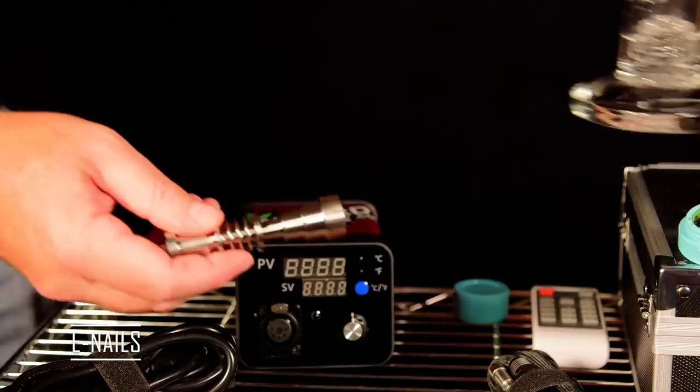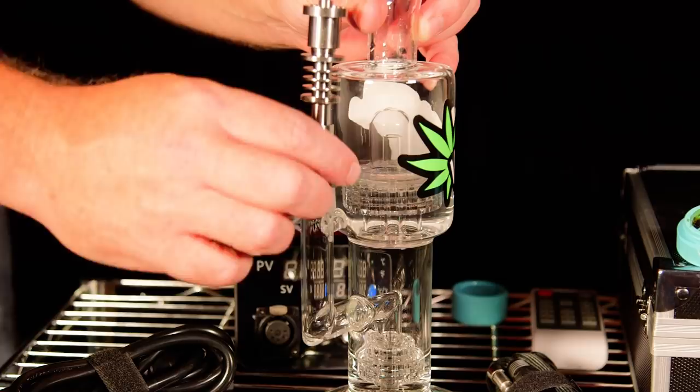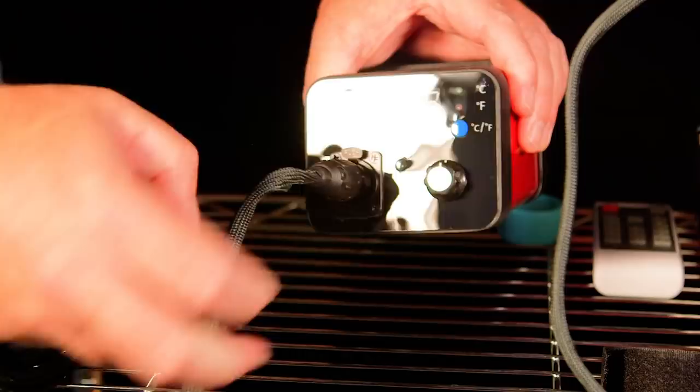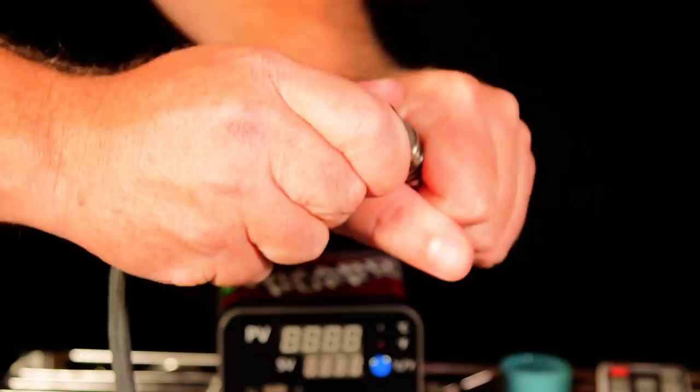Perhaps the biggest favorite among dabbers is the e-nail. E-nails are very similar to the standard titanium nail on an oil rig with one key difference. The e-nails have an electronic control center to set a precise temperature and a heating element that will keep the nail continuously heated and ready for a dab.